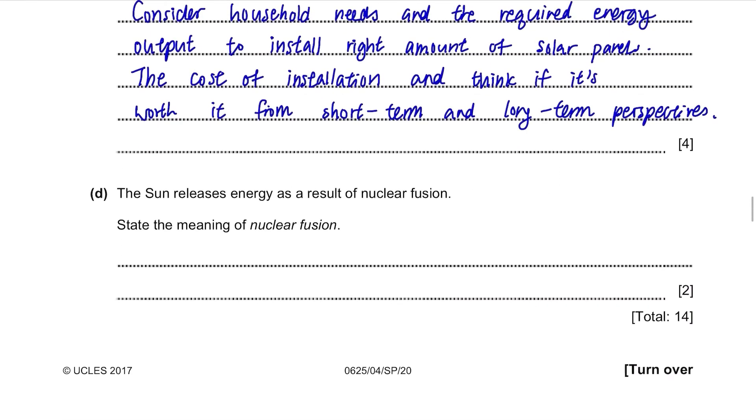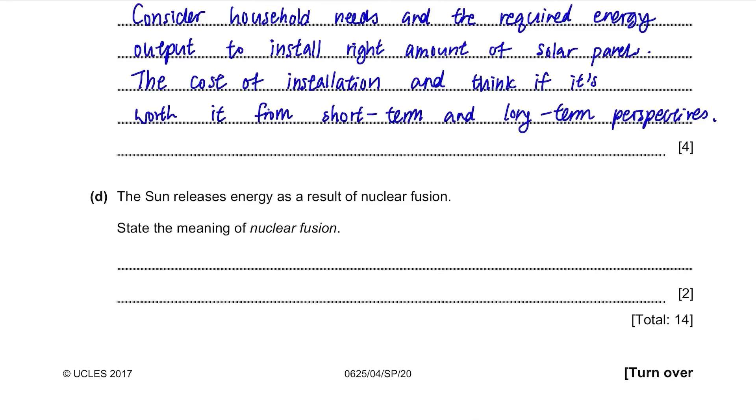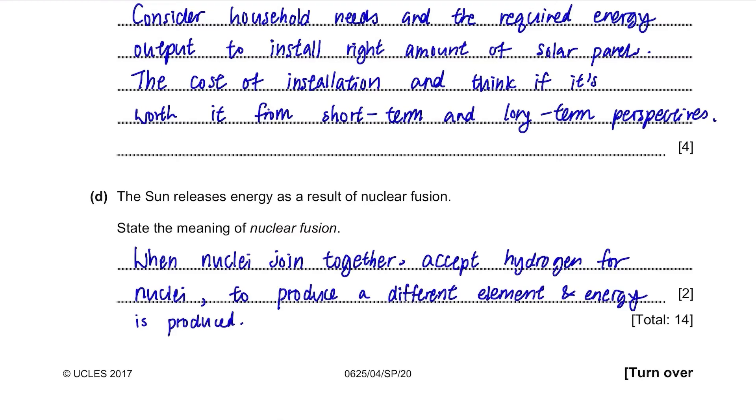Part D. The sun releases energy as a result of nuclear fusion. State the meaning of nuclear fusion. So this is just the definition. It's when nuclei join together, like hydrogen nuclei to produce a different element and energy is produced during its process.